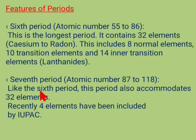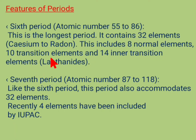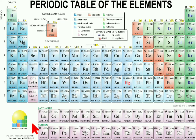The seventh period is also the longest period, accommodating 32 elements. It contains 8 normal elements, 10 transition elements, and 14 inner transition elements. Recently, 4 elements have been included by IUPAC. The modern periodic table is based upon the electronic configuration of the elements.